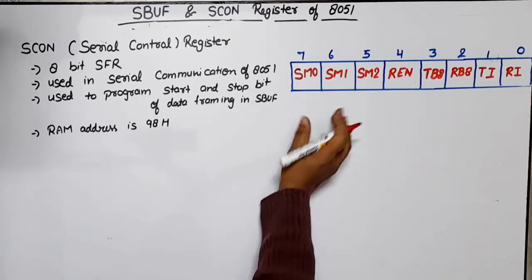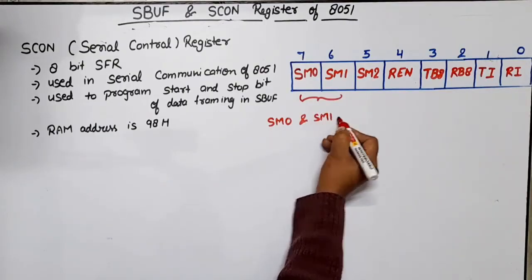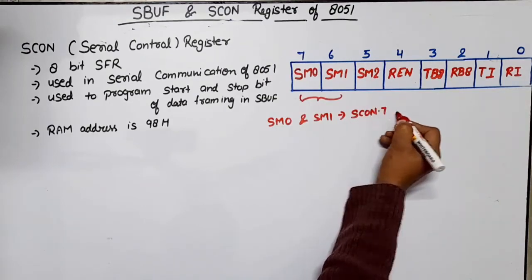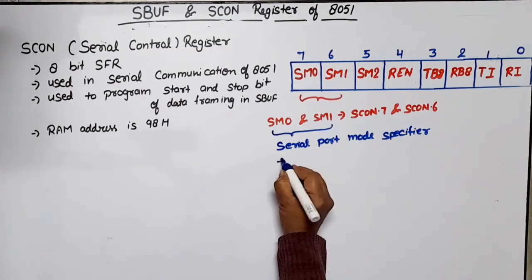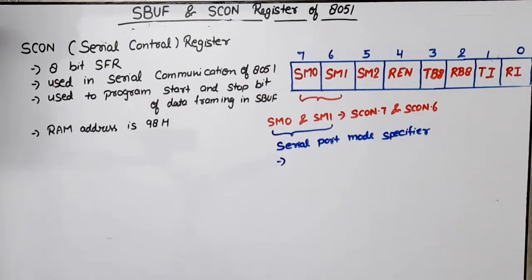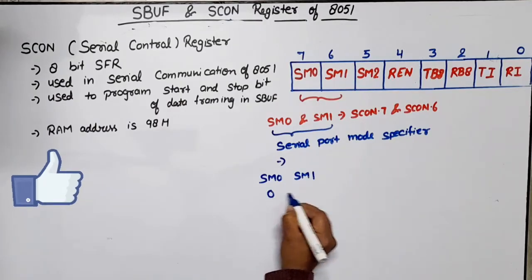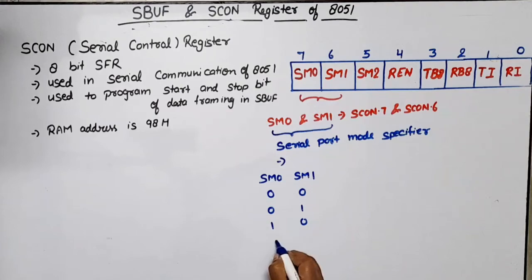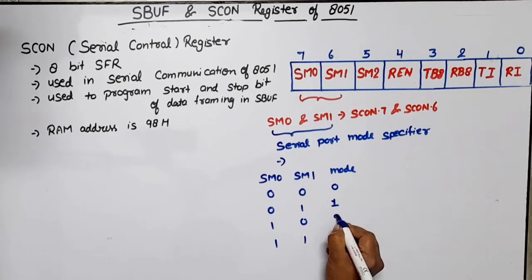Starting with SM0 and SM1, also called SCON.7 and SCON.6, these are the Serial Port Mode Specifiers. These two bits determine the framing of data by specifying the number of bits per character and the start and stop bits. With two bits, there are four possible combinations: 00, 01, 10, 11. If 00 — Mode 0 is selected; 01 — Mode 1; 10 — Mode 2; 11 — Mode 3.